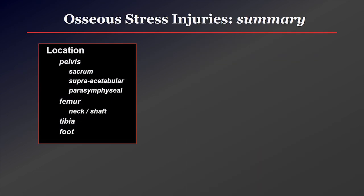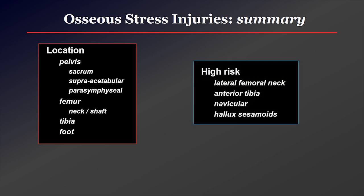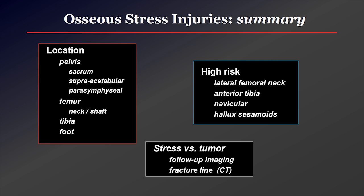In summary, I've tried to highlight the locations where stress injuries tend to occur in the pelvis and lower extremity, because if you know where to look you'll have a much higher rate of detection. You should be able to list these high-risk areas — in our practice, if we see one of these, they typically indicate we should contact the clinician by phone or email. If stress versus tumor is in the differential, consider short-term follow-up imaging because these will often declare themselves within two to three weeks, and go ahead and get a CT to see if you can detect a fracture line, since that is even more sensitive for that purpose.